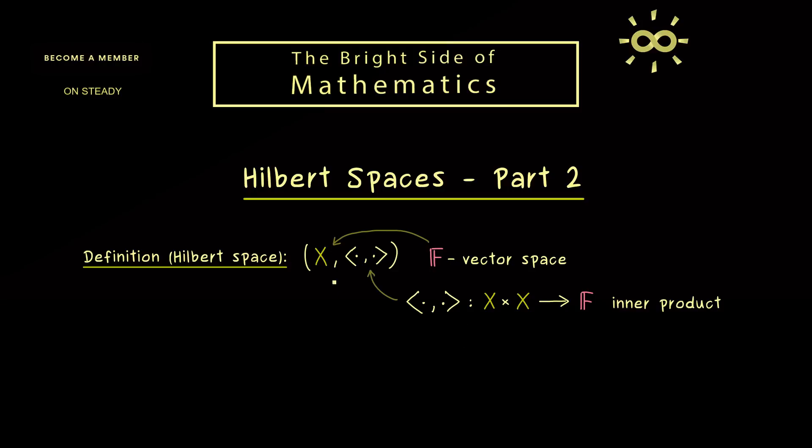And now, as we have discussed in the last video, such a map here is called an inner product if it has three properties. Namely, it should be positive definite, linear in the second argument, and conjugate symmetric.